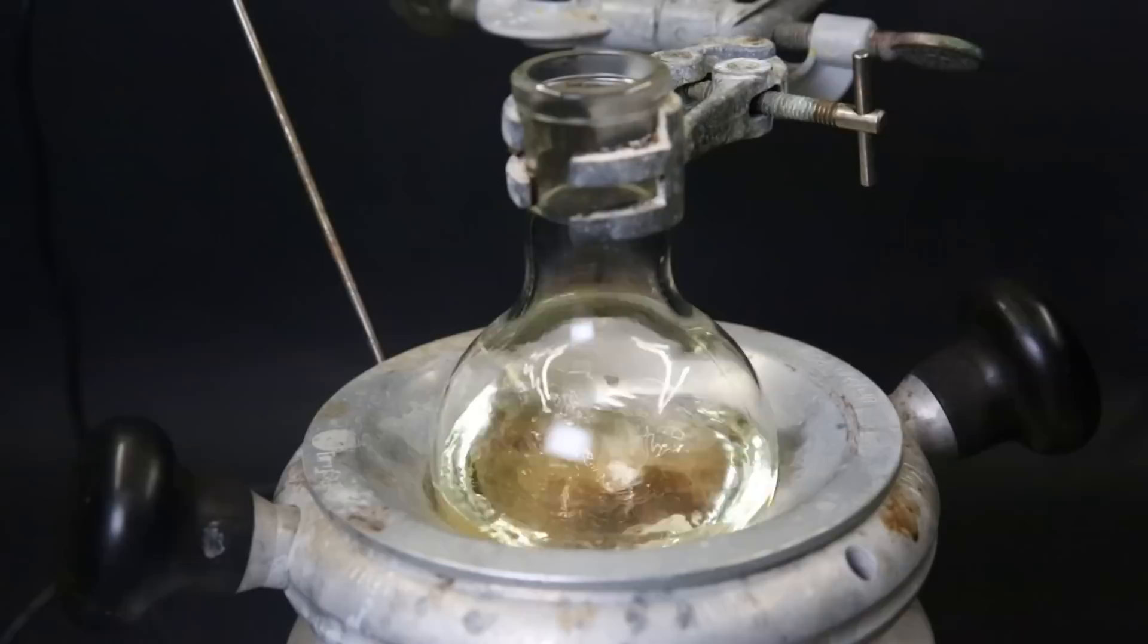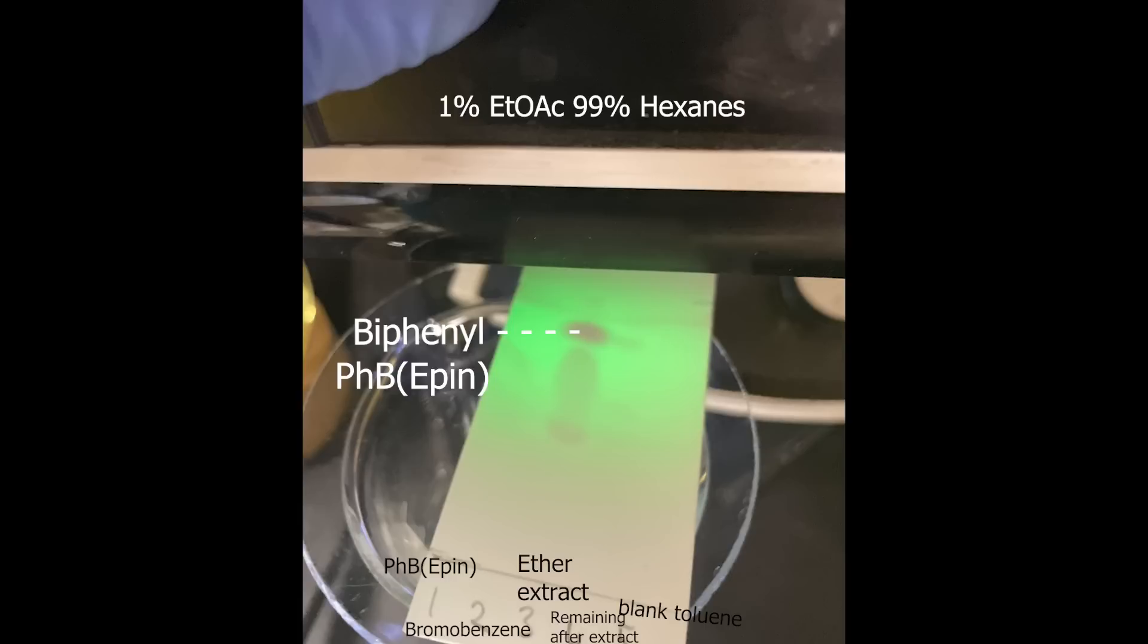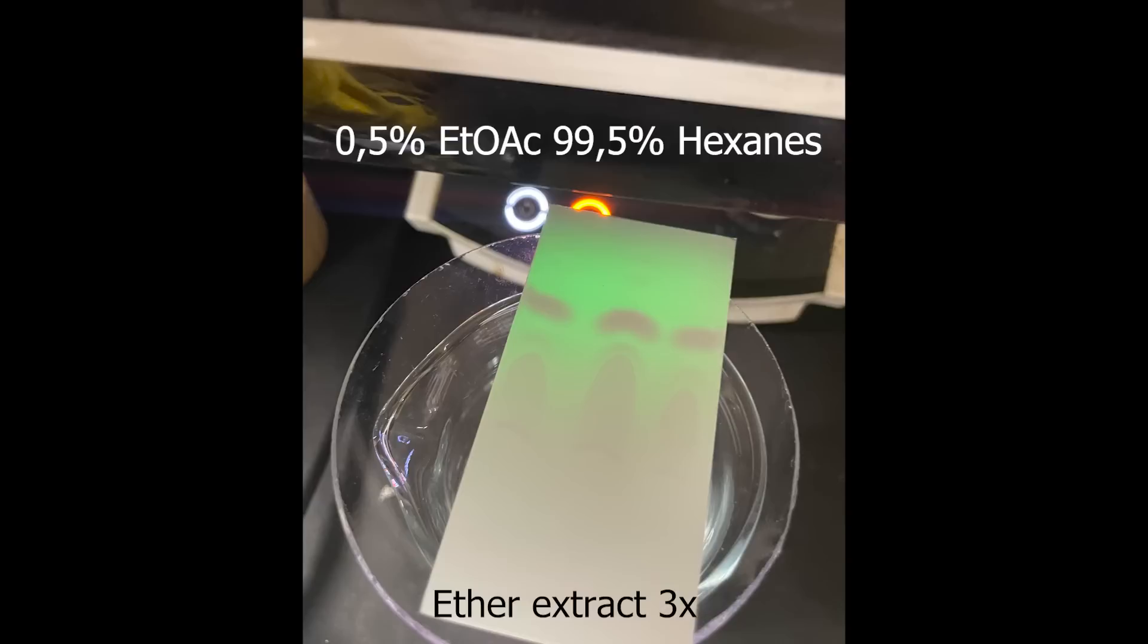I also took some TLCs of the ether extract to see what is in there. As expected, there is still phenyl B-epin present, but we also see a big spot at the top, which should be biphenyl. I also tested the ether extract with only 0.5% ethyl acetate, and I actually like this separation more. Since these compounds can't really be separated properly in any other way, I will have to do another column. After all the ether has been boiled off, a yellow liquid remains.